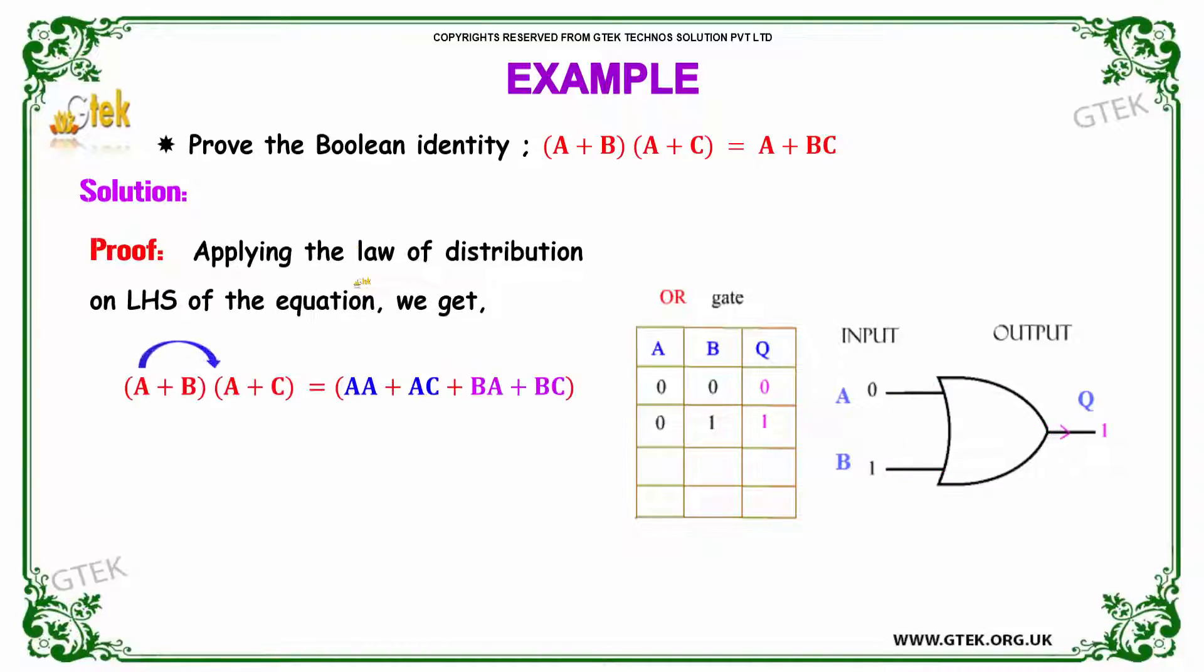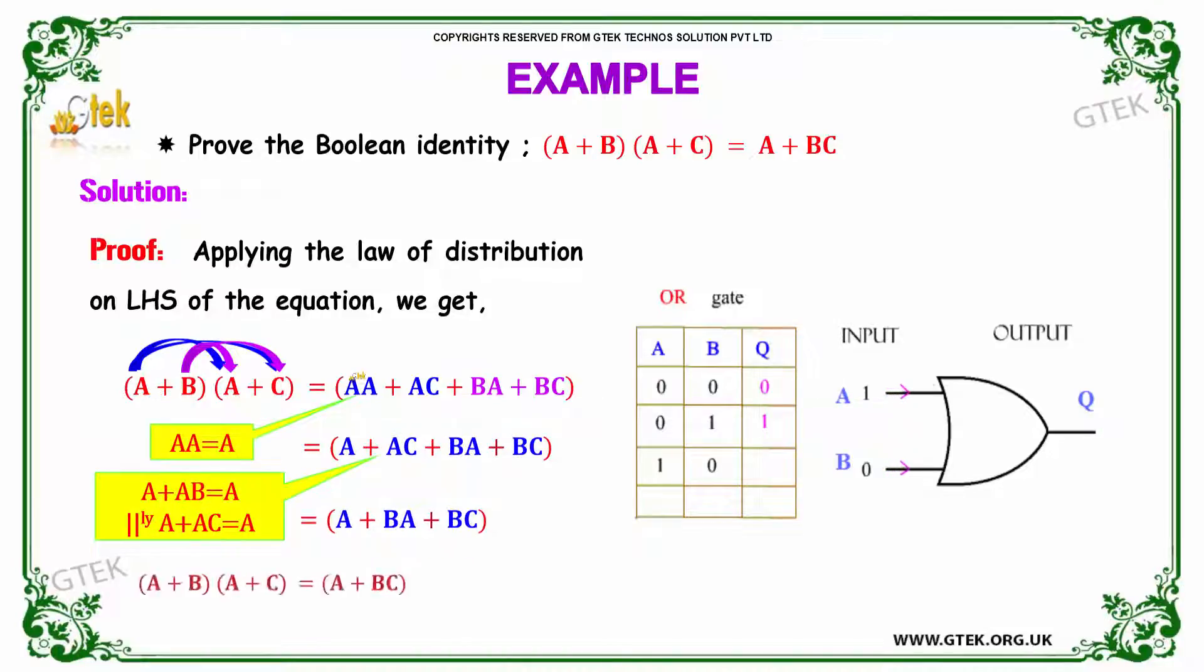Here is the solution. By taking the combination you got A into A is AA plus A into C is AC. B into A is BA and B into C is BC. AA is nothing but A and A plus AB which is nothing but once again A.